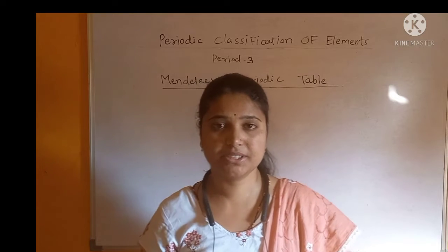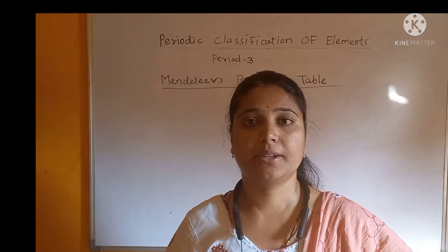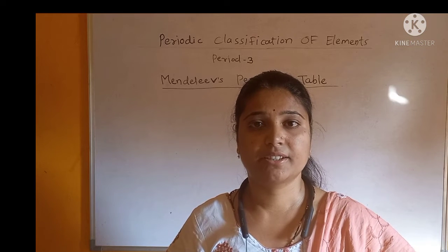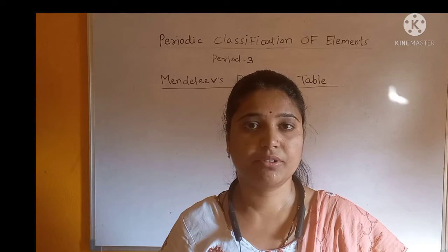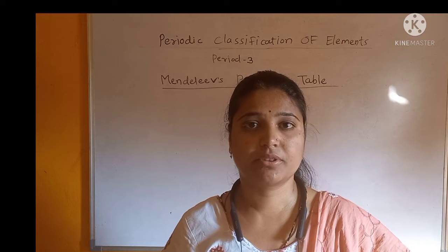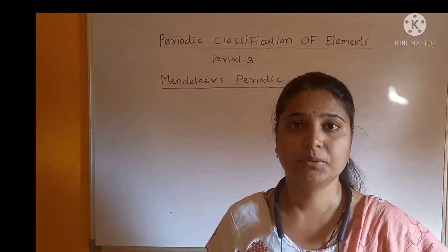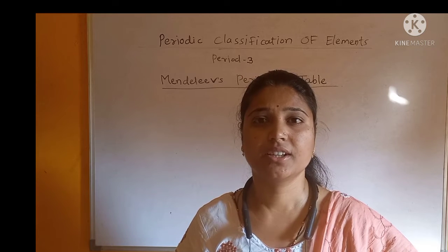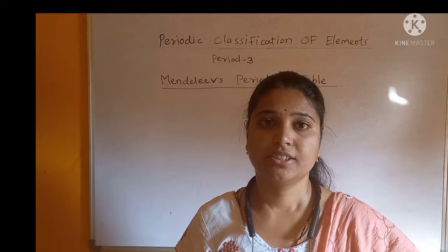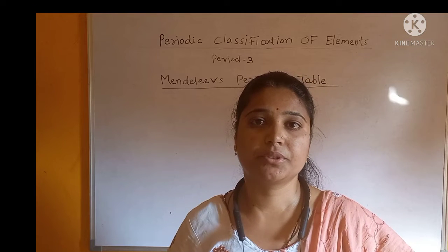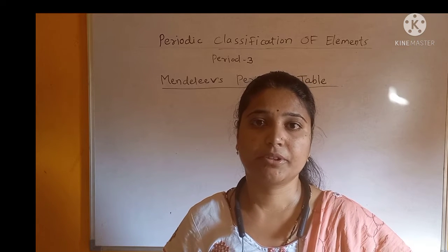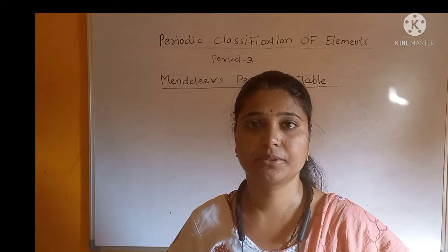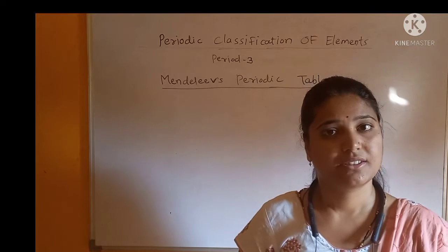Similarly, Döbereiner made groups of three elements and arranged them by their particular properties. Newlands' laws of octaves — it is called octaves because it is based upon musical notes. In the English musical notes, that is do re mi fa so la ti. According to that, Newlands arranged the elements in the periodic table.